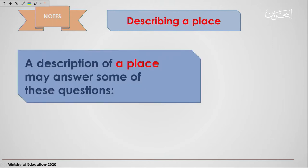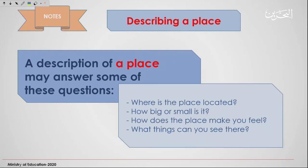How do we usually describe a place? A description of a place may answer some of these questions. Usually while describing a place we have to answer: where is the place located? How big or small is it? How does the place make you feel? What things can you see there? Usually when you tell your friend to go to a certain place, these are the things you mainly take into consideration.